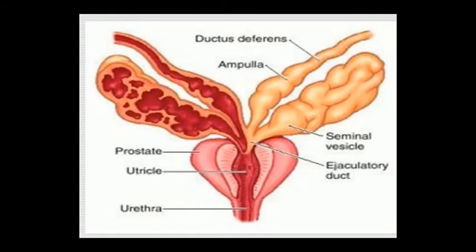Where the junction is, the seminal vesicle joins past the ampulla of the ductus deferens. The seminal vesicle joins with the ampulla of the ductus deferens to form the ejaculatory duct.